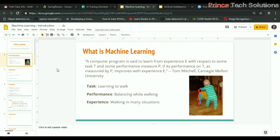This is the definition given by Tom Mitchell, a famous machine learning expert. A computer program is said to learn from experience E with respect to some task T and some performance measure P, if the performance of task T as measured by P improves with experience E.